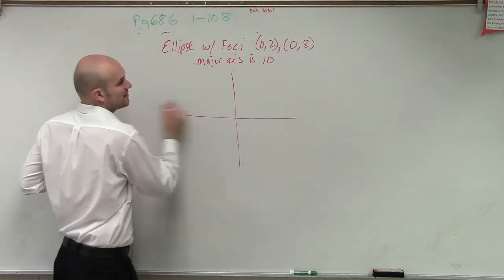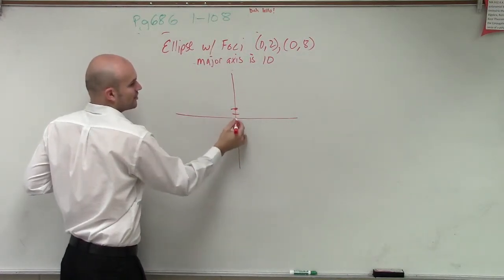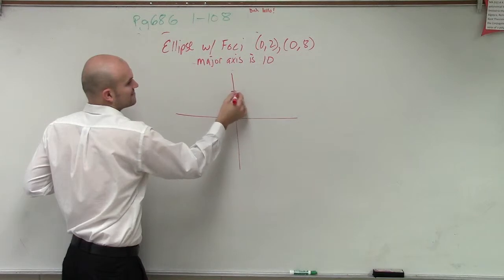We have two foci at 0, 2 and at 0, 8. So counting on the vertical axis: 1, 2, 3, 4, 5, 6, 7, 8.